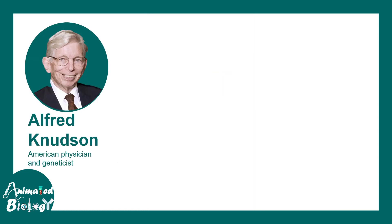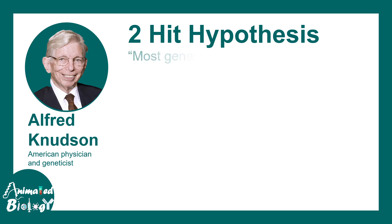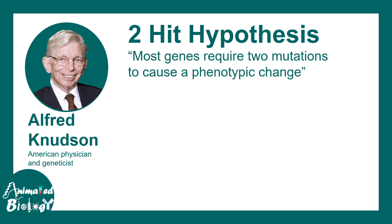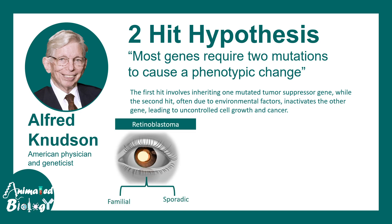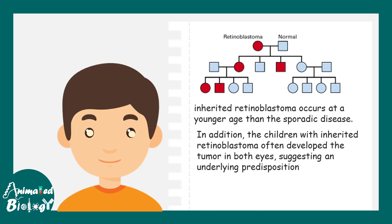A famous hypothesis by Alfred Knudson, an American physician in genetics, is called the two-hit hypothesis. He proposed that most genes require two mutations to cause a phenotypic change. The first hit involves inheriting one mutation from the parents, and the second hit is often acquired from the environment and can be sporadic. Retinoblastoma has two forms — familial and sporadic — and he concluded that inherited retinoblastoma occurs at a younger age than the sporadic form.